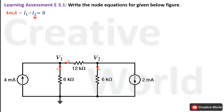The next step is to replace currents I1 and I2 with their respective equations. Current I1 will be equal to the voltage across the 6 kΩ resistance divided by the value of the resistance, so the equation for I1 will be V1 divided by 6 kΩ.